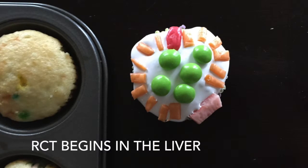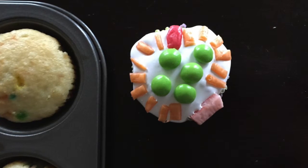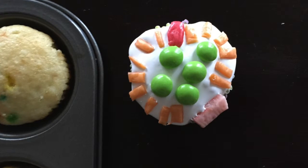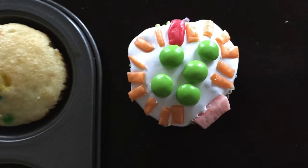RCT begins in the liver by producing nascent HDL. The cupcake pan represents the liver and the cupcakes represent the HDL. As you can see, the cupcake is decorated with an assortment of candy.